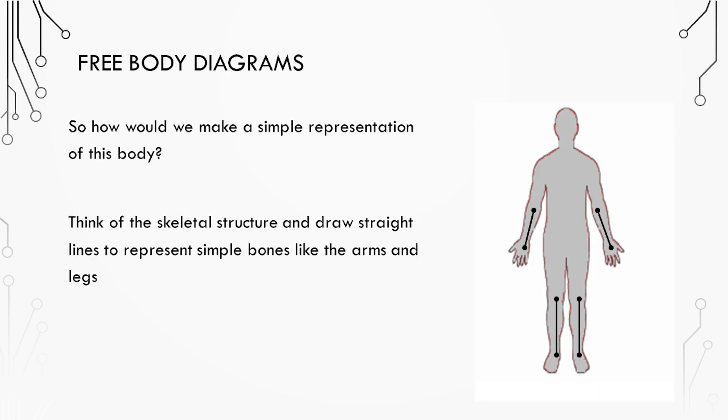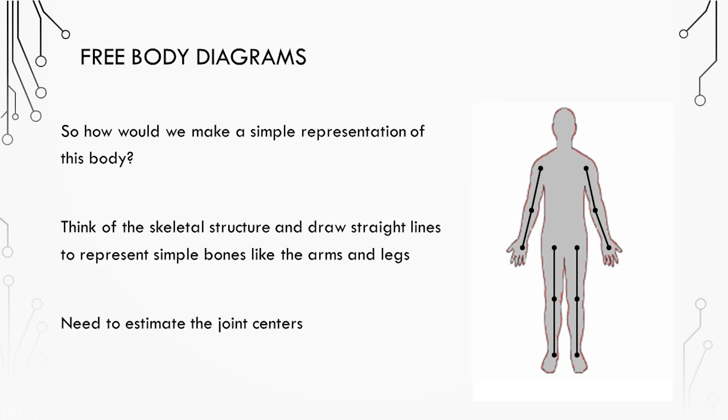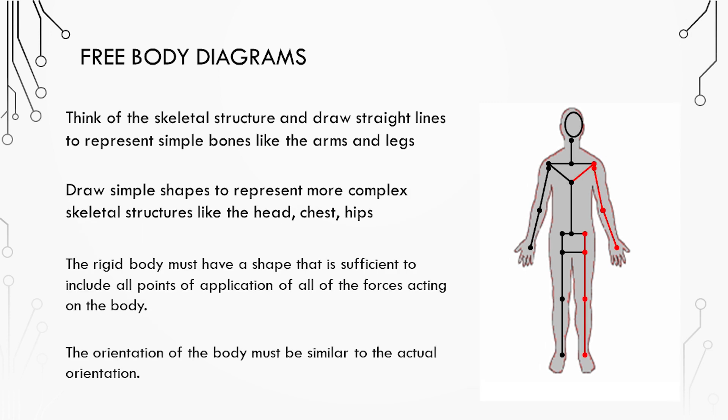Let's look at how we would make a simple representation of a human body. Think of the skeletal structure and draw straight lines to represent long bones in the arms and legs. You'll need to estimate the joint centers so do the best you can. We can then draw simple shapes to represent more complex skeletal structures like the head, chest, and hips.